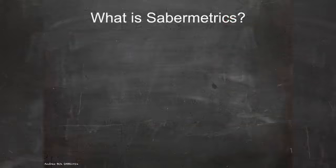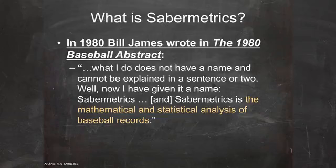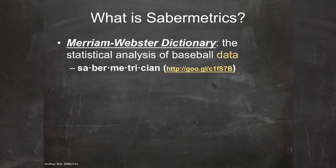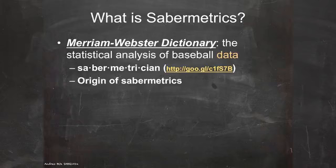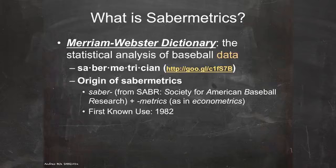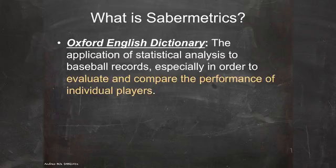In trying to define and understand what sabermetrics is, let's start with Bill James' first definition in 1980. He says it's the mathematical and statistical analysis of baseball records. Merriam-Webster substitutes the word 'data' instead of 'baseball records,' but it's still pretty close to Bill James' original definition. They also have a nice URL to pronounce the word 'sabermetrician' and give the origin of the word, though Merriam-Webster gets the date wrong. Moving on to the OED, their variation on the definition is again very similar to Bill James.